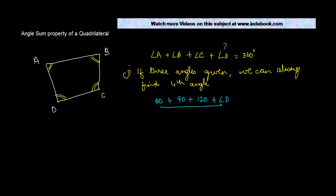We know that the sum of all these four is equal to 360 degrees. So if you know three angles, the fourth angle, let's say angle D, will be equal to 360 degrees minus the sum of the rest of the three angles.